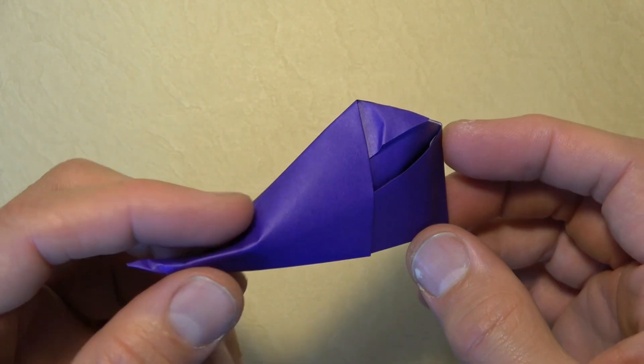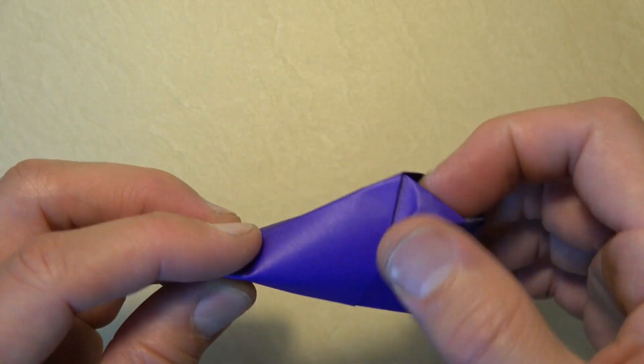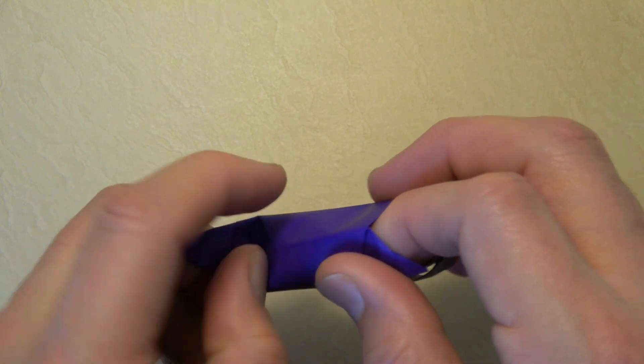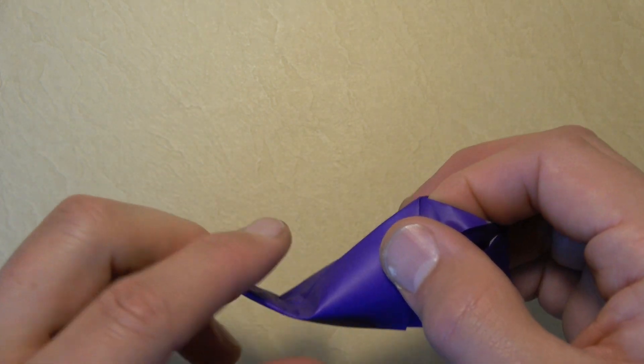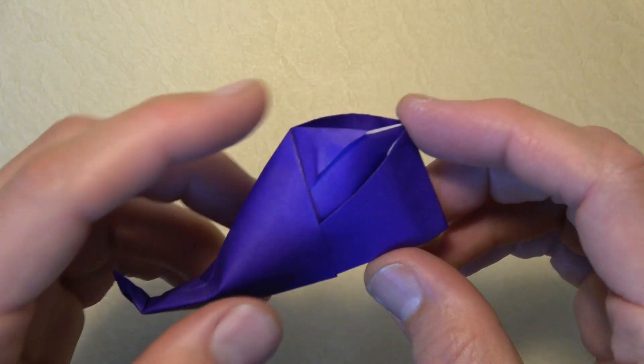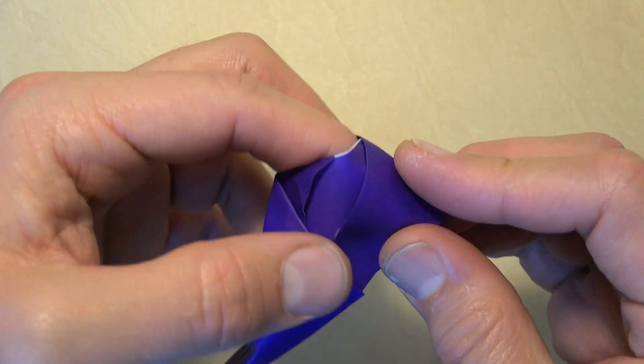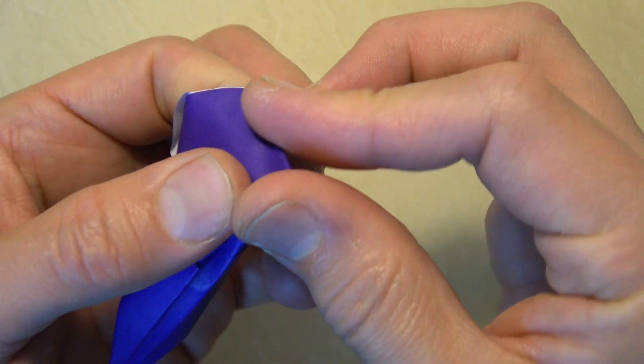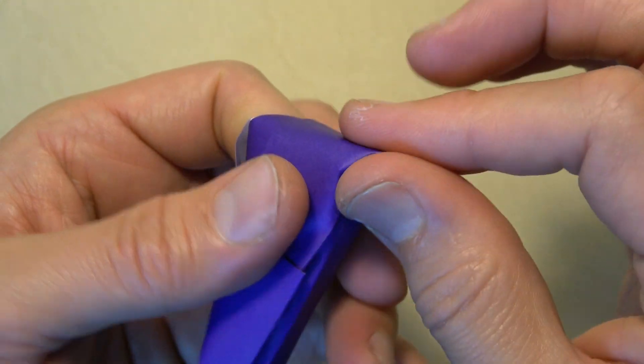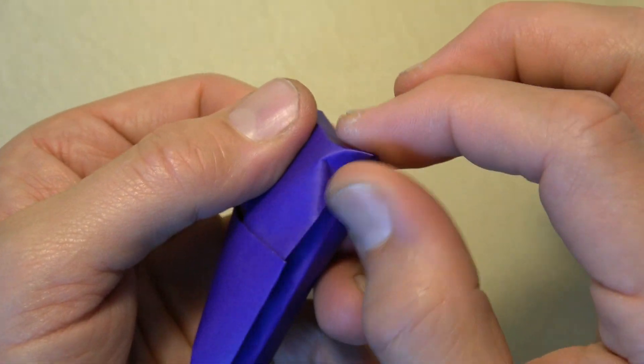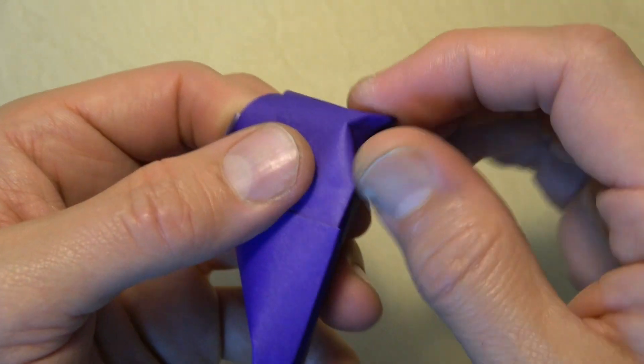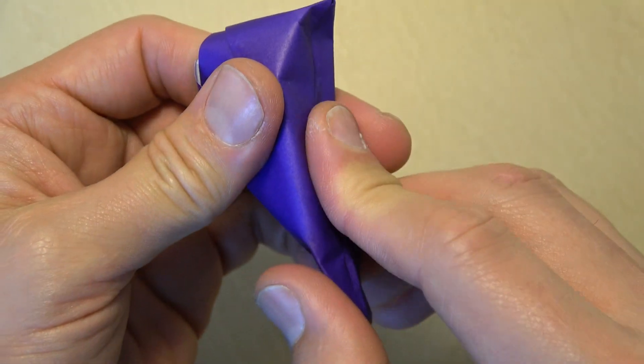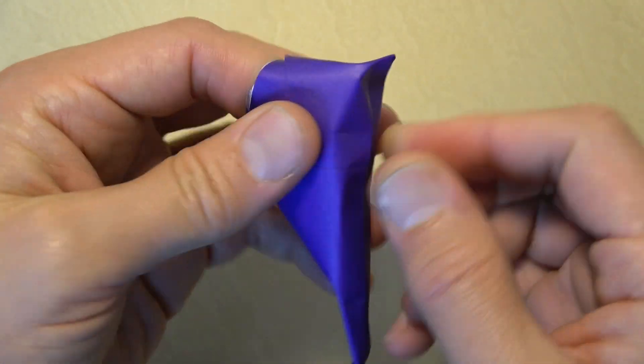And there we have the elf shoe or elf slipper. And we can curl it up like that. And if you want, you can shape it more by putting your finger in here and just squashing the heel like that. Just pinch it. And now just shape the slipper to taste.